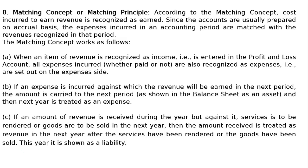Second, if an expense is incurred against which the revenue will be earned in the next period, the amount is carried to the next period and shown in the balance sheet as an asset, and the following year is treated as an expense. Third, if an amount of revenue is received during the year but services are to be rendered or goods sold in the next year, then the amount received is treated as revenue in the next year after services have been rendered or goods sold. This year it is shown as a liability.